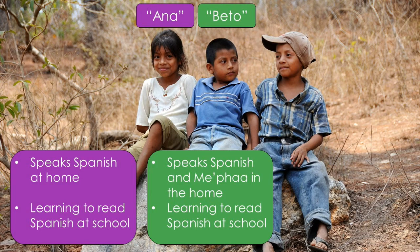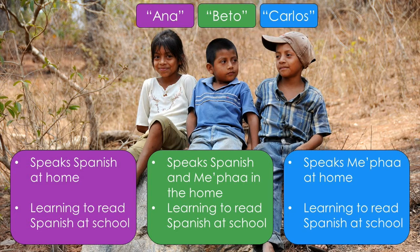Then there are kids that we can call Beto. One of his parents speaks Spanish, but the other speaks only Matpah, and he primarily relates to his parents and grandparents and other relatives in Matpah. He will start kindergarten with some Spanish skills. There are more kids like Beto than Ana in the Matpah communities, but not many. Finally, there are kids that we can call Carlos. Both of his parents only speak Matpah, and he will start kindergarten with very minimal Spanish skills. In the Matpah communities where I have worked, the majority of the kids are like Carlos. Research shows that children who first receive some literacy instruction in their mother tongue will perform much better when they begin to read in a second language.